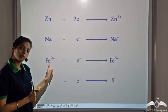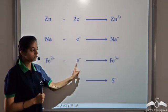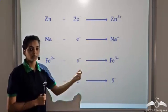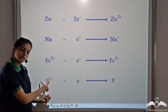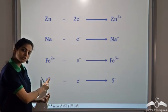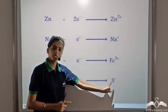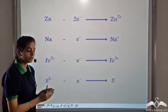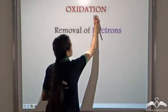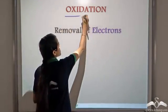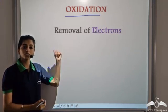Similarly, if we take Fe2+, this means it has already lost two electrons. If it loses one more electron, it becomes Fe3+. For a negatively charged ion, say S2-, the sulphur atom has two extra electrons. When it loses one electron, it has only one extra electron, so it becomes S-. So the process involving removal of electrons is known as oxidation — whenever there is removal of electrons, that process is known as oxidation.